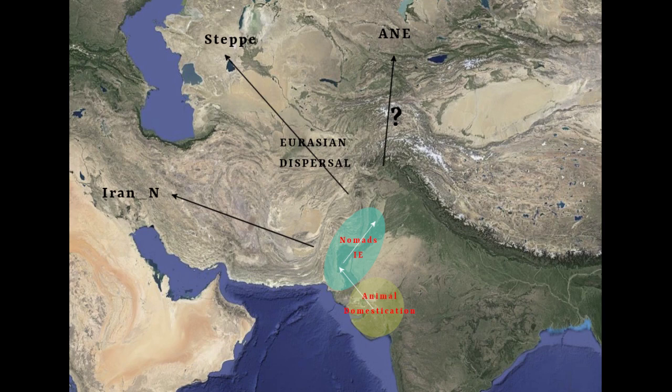It's actually quite easy to show that these populations like the Steppe and IranN actually originated in India. We can see this by running a simple PCA, or we could do more complex analysis using formal stats, but for now I'm just going to show you the PCA.